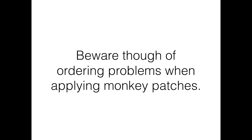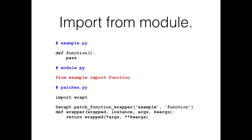Does it solve all the problems? One remaining problem with monkey patching: if you use from example import function, anyone see where I'm going? If you just do import example and reference example.function, patching works fine. But if someone does from example import function, they've created a copy of that in another module. If you patch the original you've only patched the original — you haven't patched this copy. So you end up with problems around the order in which things are done. You need to get the monkey patching in before this kind of import happens.